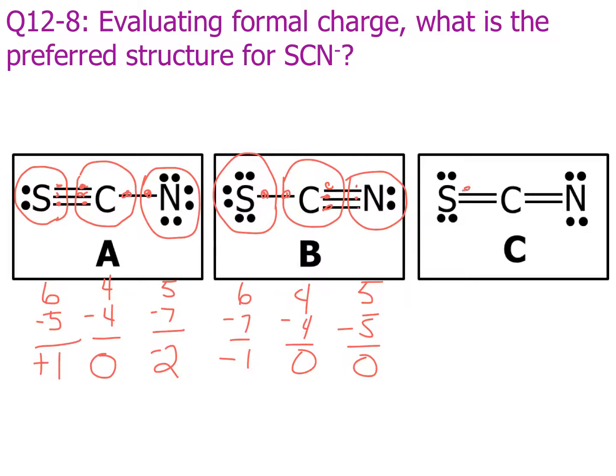Alright, last one. Sulfur is group six, with six in the circle, so zero. Carbon, group four, and four in the circle, so zero. And nitrogen, there we go, is in group five, and there are six in the circle, so minus one.